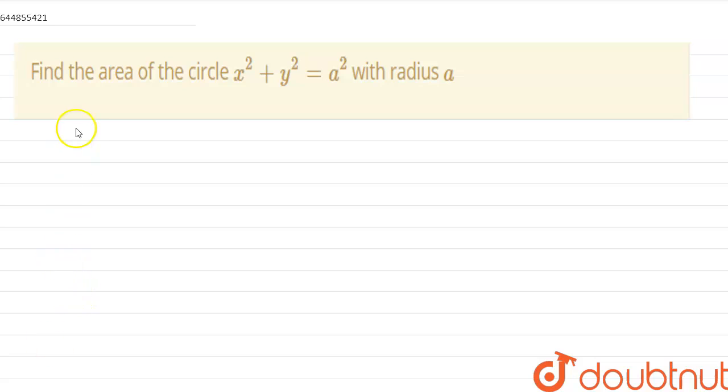Hello guys, today our question is: find the area of the circle x² + y² = a² with radius equal to a.